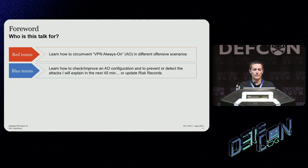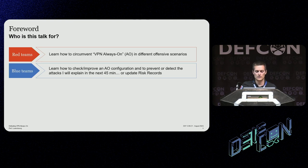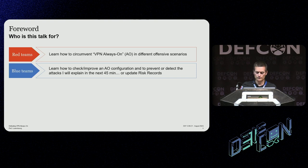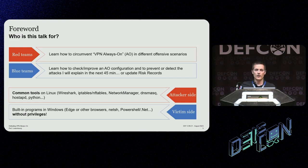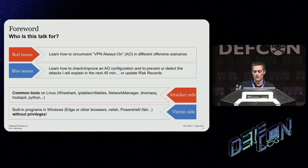Who is this talk for? Definitely red teams or offensive teams — I will show attacks that allow you to defeat Always On and bypass this control. For the blue team, I will show the main issues in the most popular VPN agents. Most importantly, I will focus on techniques that we can use without privileges, without complex tools, without specific attacks — simple attacks that anyone can replay in offensive assignments.